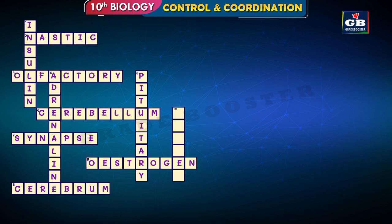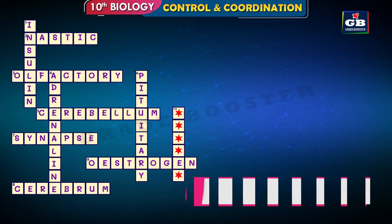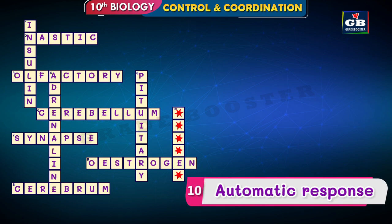Ten down — automatic responses. This is a very easy one. These are automatic responses produced in our body by the nervous system. Try to find the answer and complete the crossword puzzle.